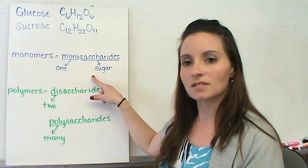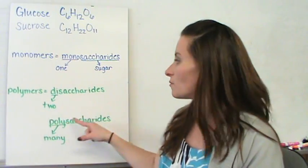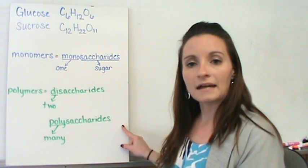Monomers are monosaccharides, and polymers are both disaccharides and polysaccharides.